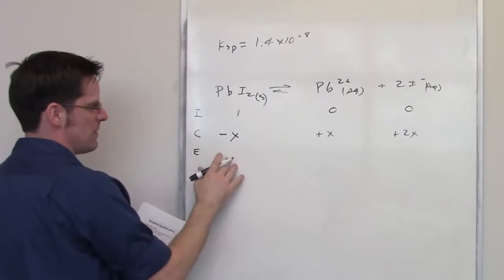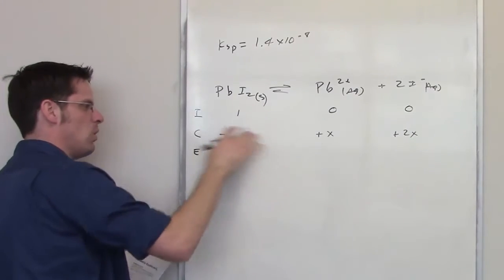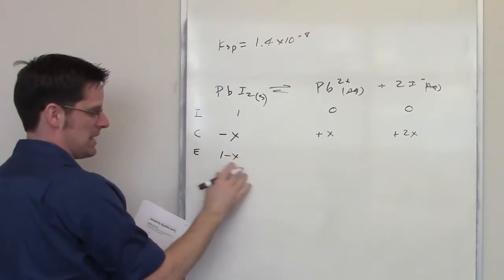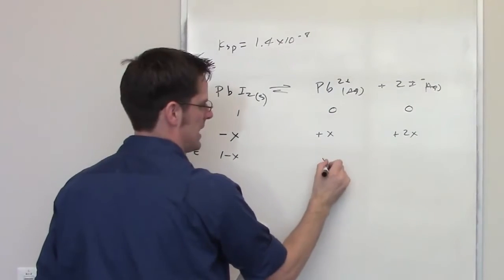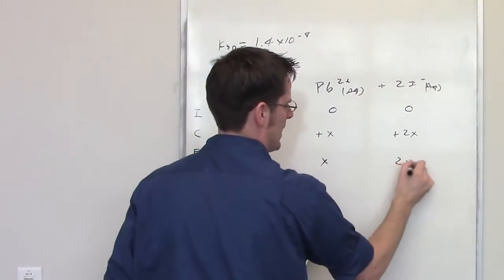The final equilibrium concentration amounts are going to be made by just adding row 1 and row 2. So I've got 1 minus x is my equilibrium amount, 0 plus x, and 0 plus 2x.